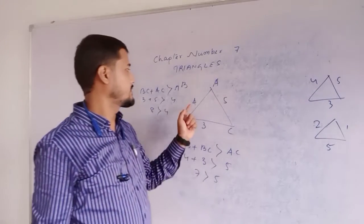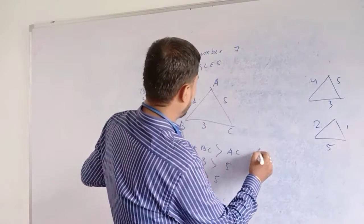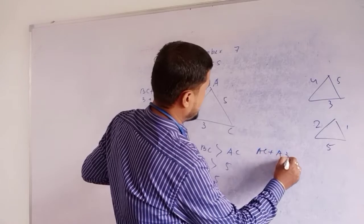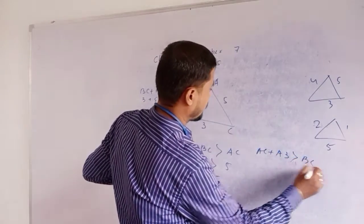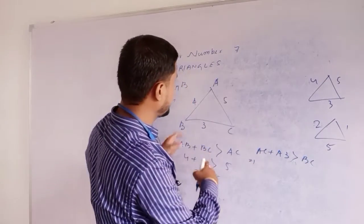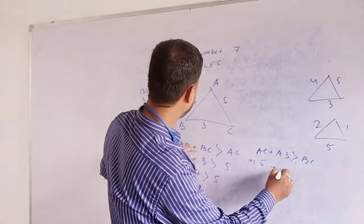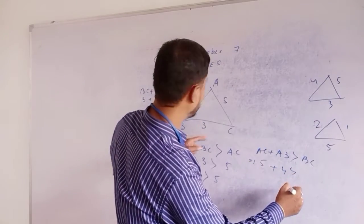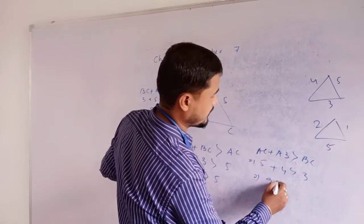Next is AC plus AB is greater than BC. What is the value of AC? 5. AB? 4. Better than BC? BC is 3. Then we can write 9 greater than 3.